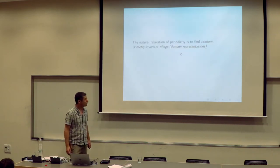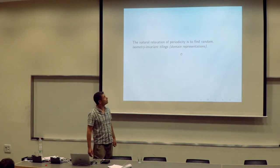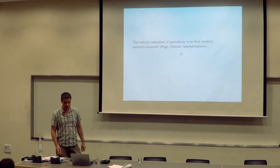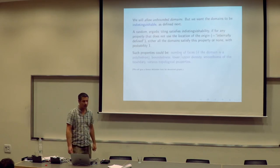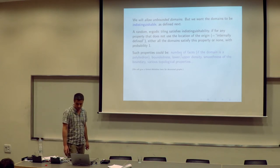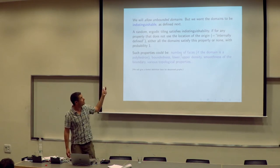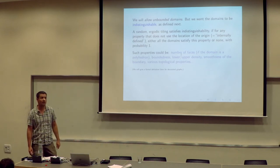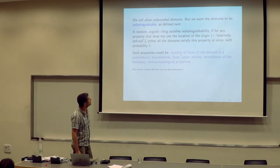The next idea is to find random tilings that are isometry invariant and represent our fixed graph G in Euclidean space. We will allow unbounded domains, and I will give a heuristic for what we mean by indistinguishability of domains, and later define this notion for graphs more rigorously.